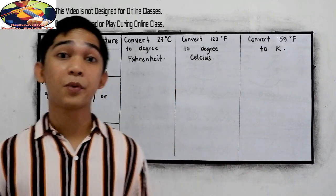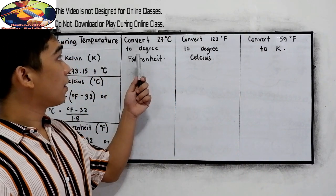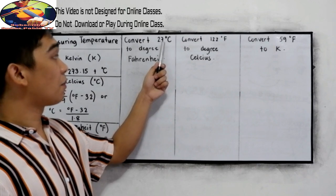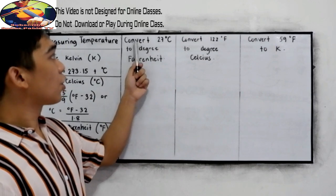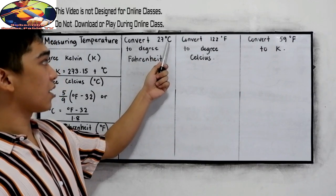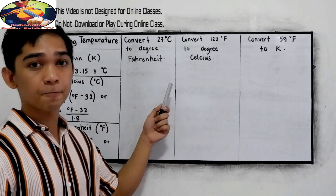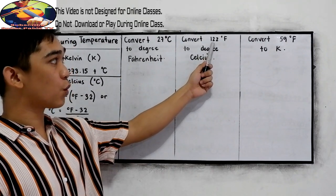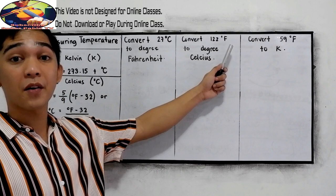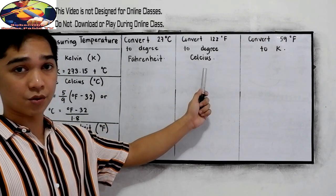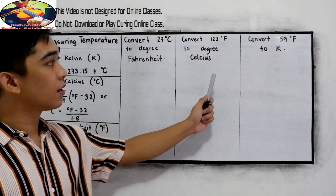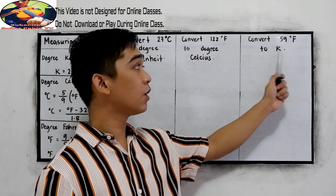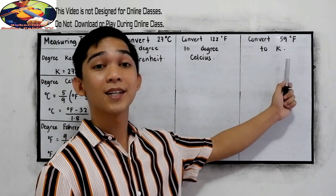Now let's try the following problems. Number one: convert 27 degrees Celsius to degree Fahrenheit. Number two: convert 122 degrees Fahrenheit to degree Celsius. Number three: convert 59 degrees Fahrenheit to Kelvin.